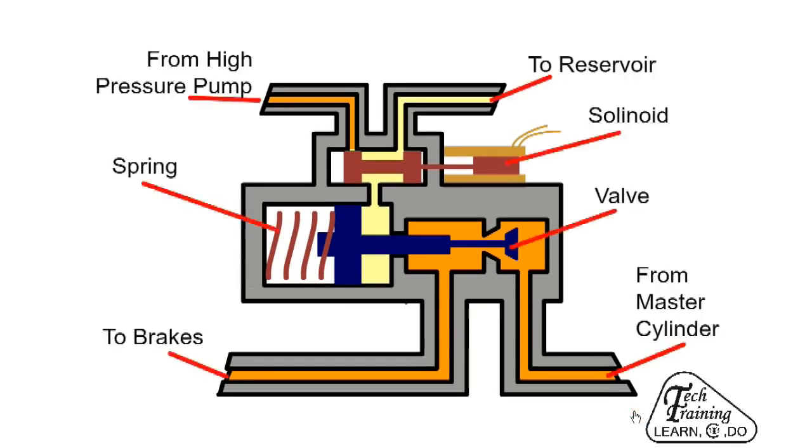The modulating valve is normally in the open position and has no effect on the braking system. At the top left there is a connection to a high pressure pump, and at the top right there is a connection back to the reservoir. Bottom right is the input from the master cylinder, and bottom left is the outlet to the wheel.